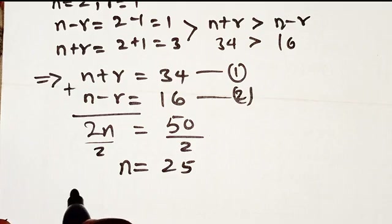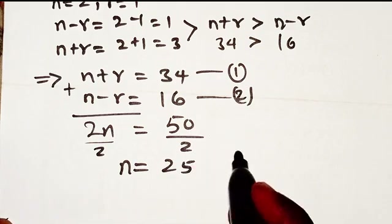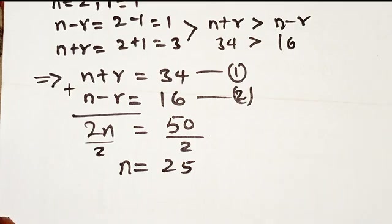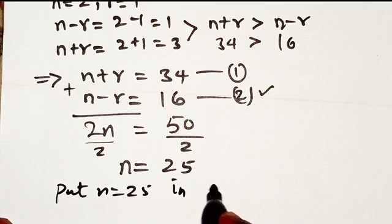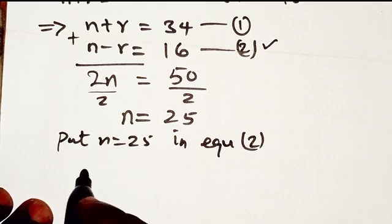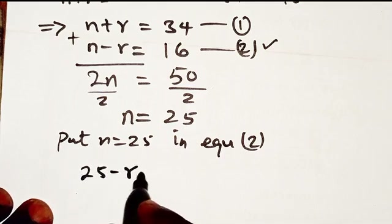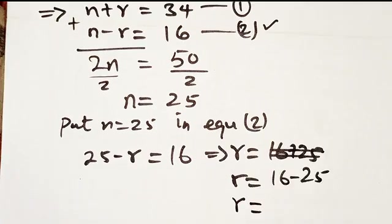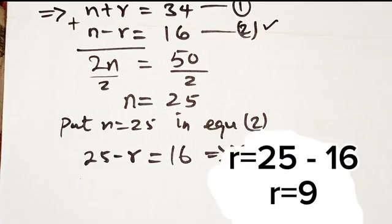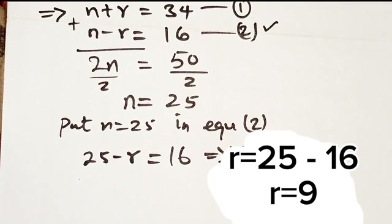Now we want to find r. We substitute n equals 25 into equation 2, which is the simpler one. So we have 25 minus r equals 16, which implies r equals 9.